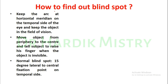How to find the blind spot on the perimetry examination? Keep the arc at the horizontal meridian on the temporal side of the eye and keep a moving object in the field of vision. Remember that you have to check the blind spot only on the temporal side of either the right eye or the left eye.